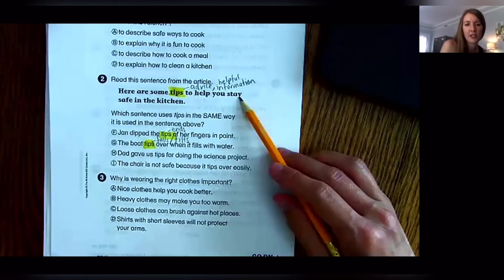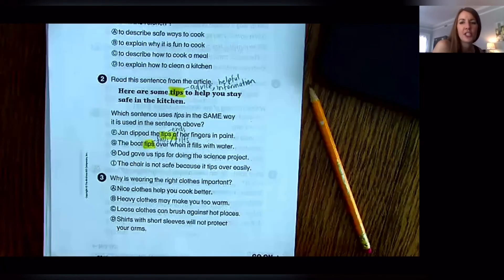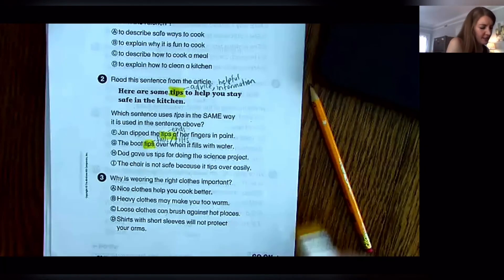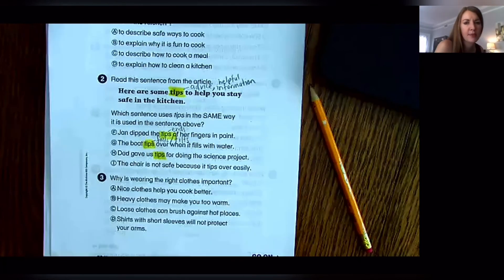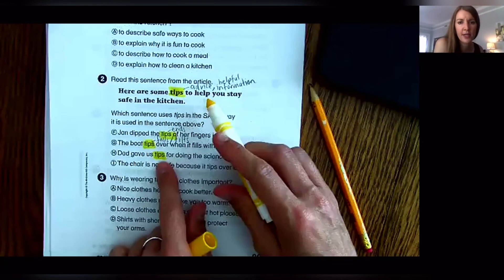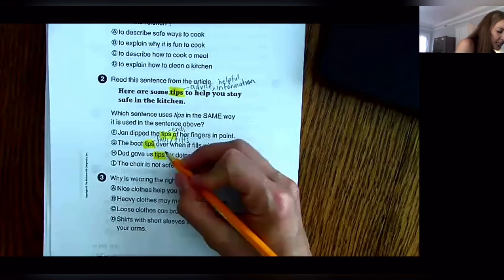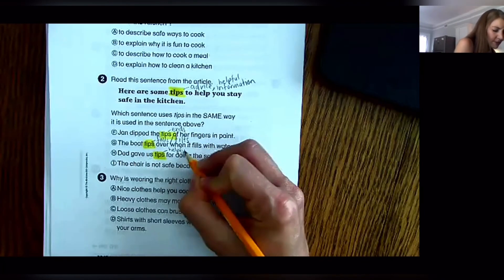H: Dad gives us tips for doing the science project. So here's another word tips. Dad gives us tips. Could I use dad gives us advice or helpful information? I think that's going to be the one, but I'm going to double check helpful information.